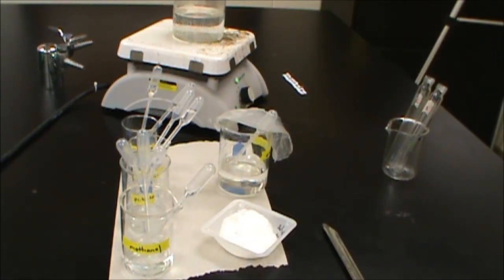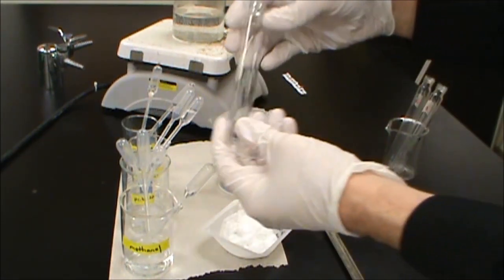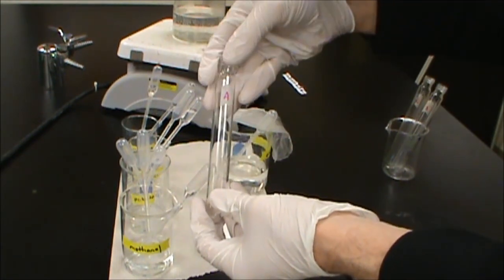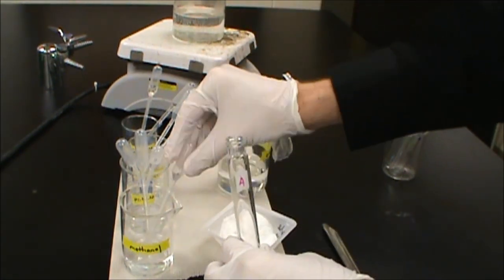We're going to go through and show you how to make three different esters. So the first one, we're going to take test tube A here, and we're going to add 10 drops of methanol to it.